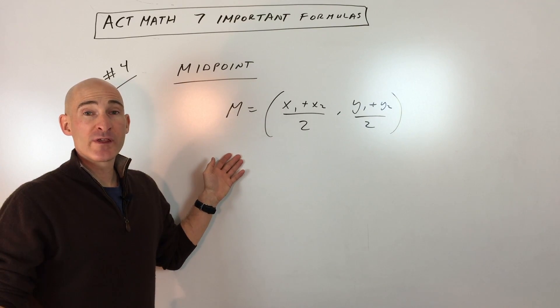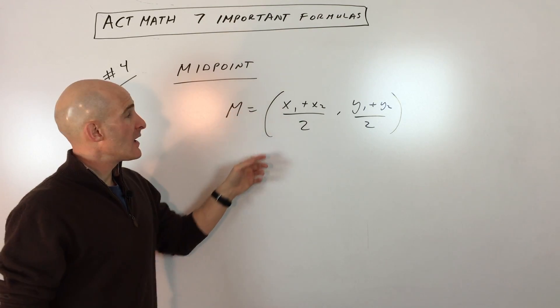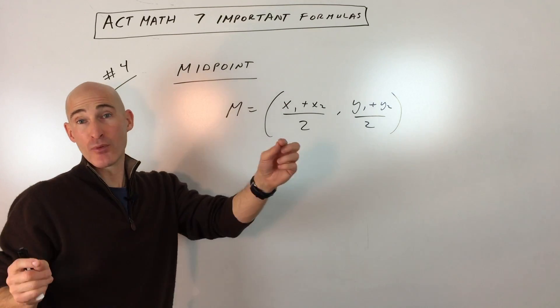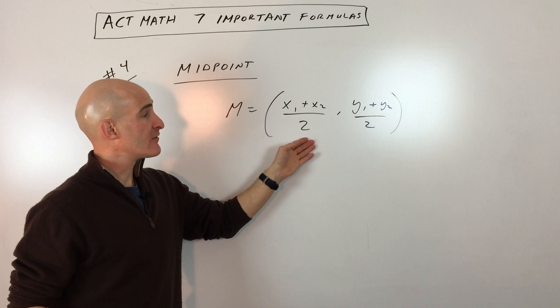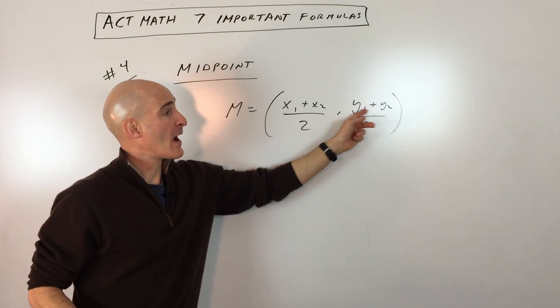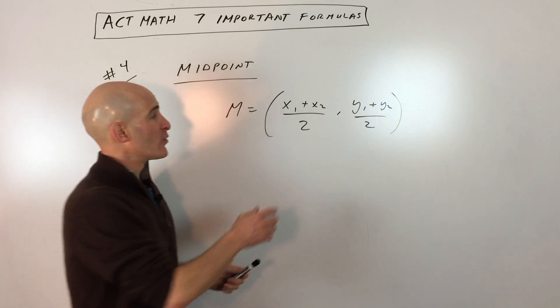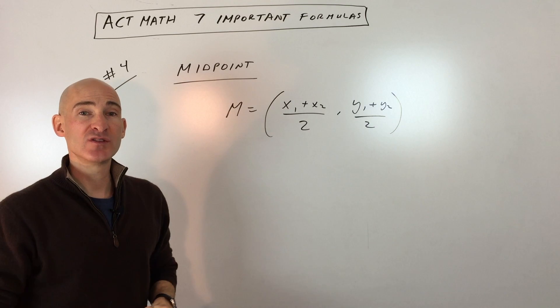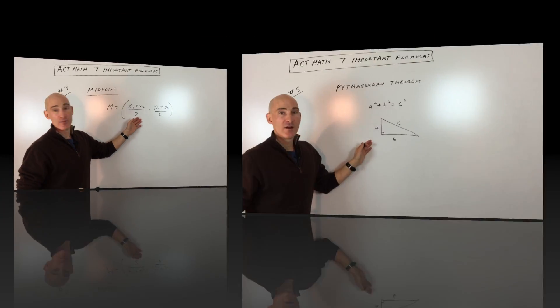The fourth formula that we're looking at here for the math section of the ACT is the midpoint formula. And basically what the midpoint formula does is it finds the point that's halfway in between two endpoints. And what you do is you add the X coordinates of the two points together and divide by two. And then you add the Y coordinates of the two points together and divide by two. So it's like finding an average. But when you do that, this is going to be the coordinate of the midpoint, the point again halfway between the two endpoints. So again, another important formula to know, midpoint.